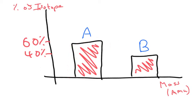I've got two different isotopes, A and B. I've got 60% of A and 40% of B. So how would I work out the average atomic mass of these isotopes?